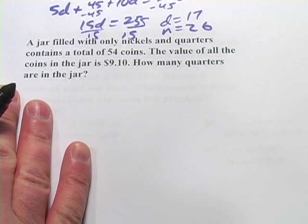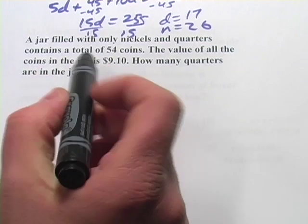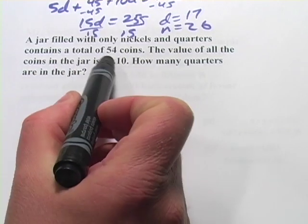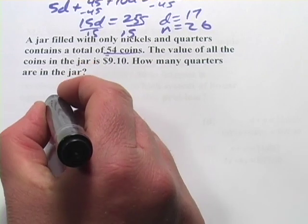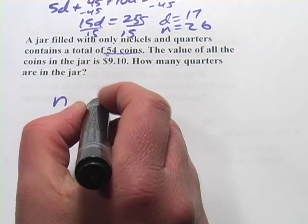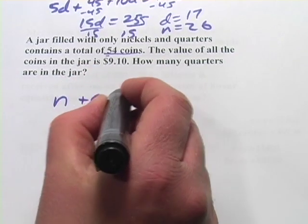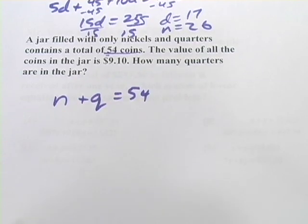This time we have nickels and quarters, but it's going to be very much the same. A jar filled with only nickels and quarters contains a total of fifty-four coins. So our first equation then can be the number of nickels plus the number of quarters equals fifty-four. That's easy enough.